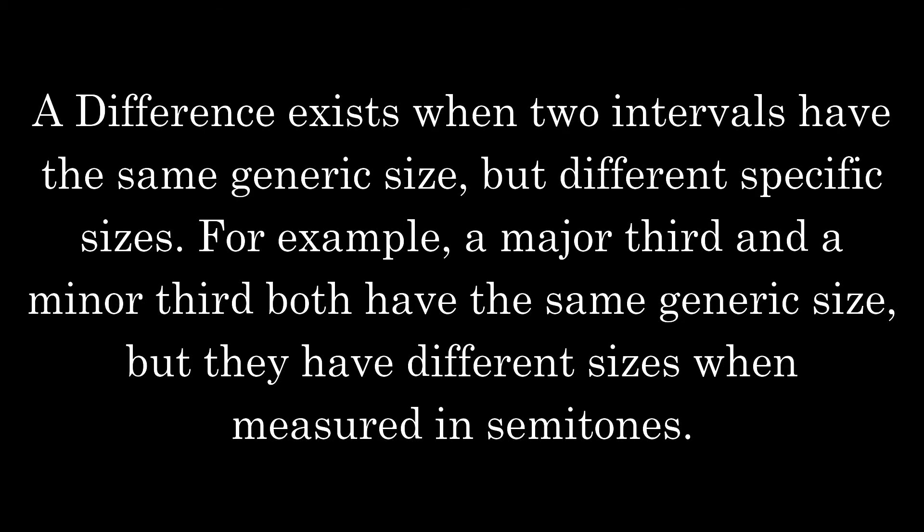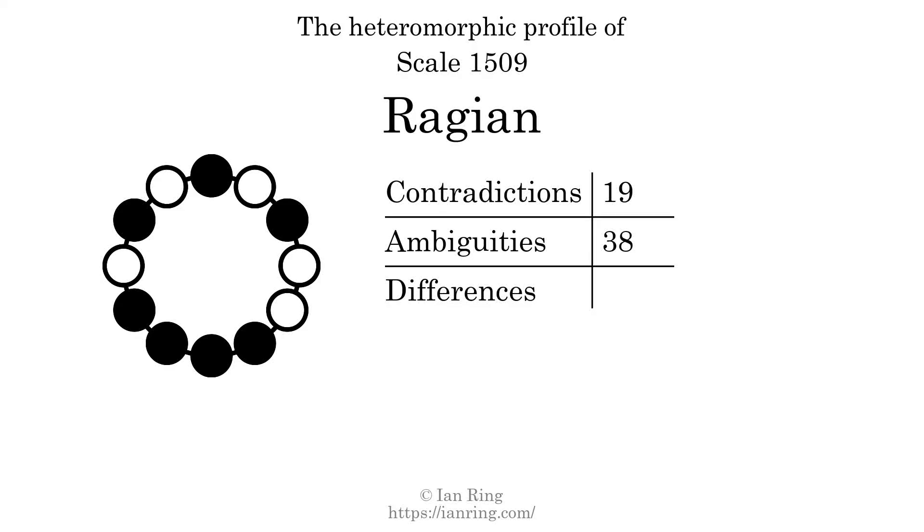A difference exists when two intervals have the same generic size, but different specific sizes. For example, a major third and a minor third both have the same generic size, but they have different sizes when measured in semitones. The number of differences in this scale is 102.